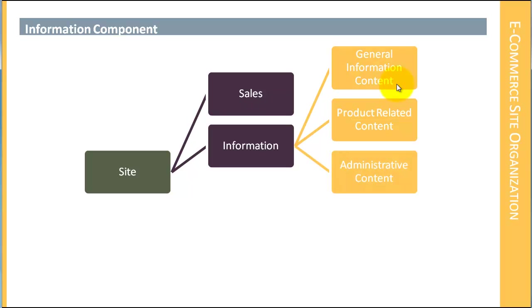We have administrative content such as our FAQs, our policies, our support information, and that sort of thing. And then we have the SEO component, which is the way in which we organize all of this information so that it can be easily indexed and found by search engines. As we develop the site, we'll look at how our site's organization affects SEO and how we will develop what Google calls semantic URLs — that is, URLs that tell a story and are easily understood by humans.